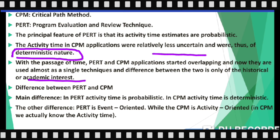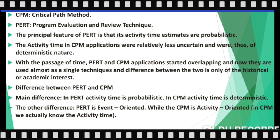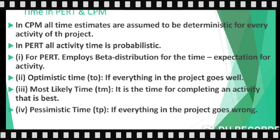As shown in the fifth point, the main difference is that PERT activity time is probabilistic — the activity time is not certain — while in CPM it is deterministic and you know the exact duration of different activities. The other difference is that PERT is event-oriented while CPM is activity-oriented, because in CPM we know the actual time of activities.